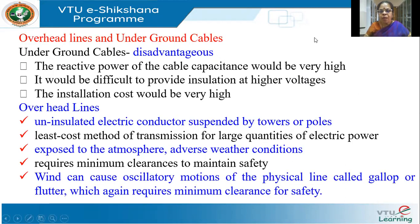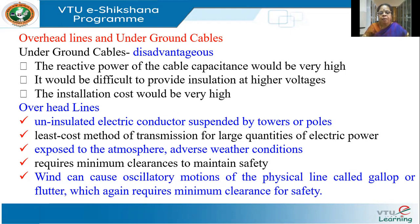We have two options: overhead lines and underground cables. The overhead line is what we see everywhere — transmission lines going across towers, and on the distribution side from transformers to poles. These are all overhead lines, and any overhead line is a bare conductor. In contrast, we have underground cables, which are placed in trenches below the ground.